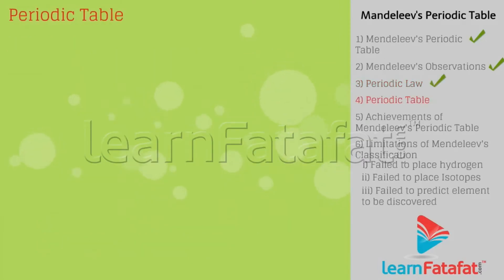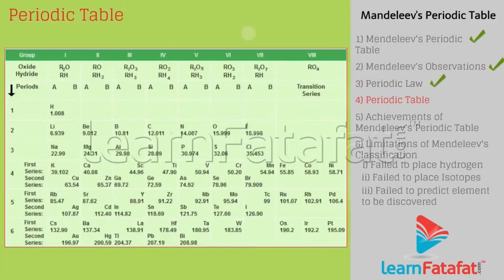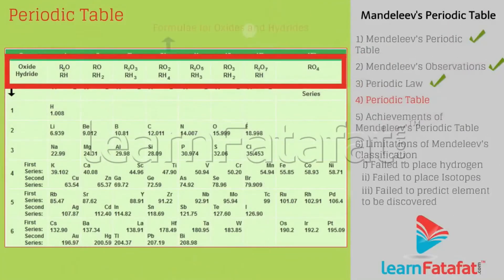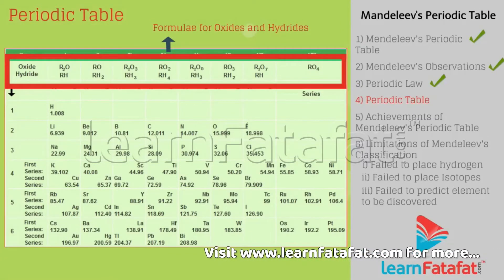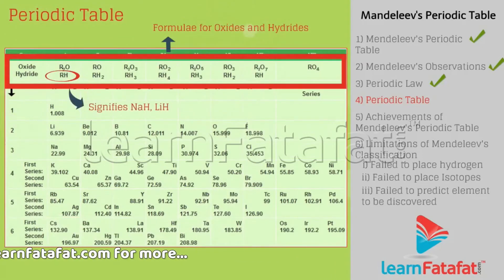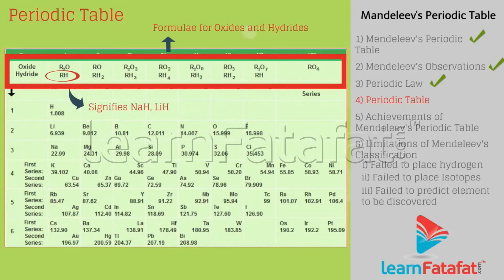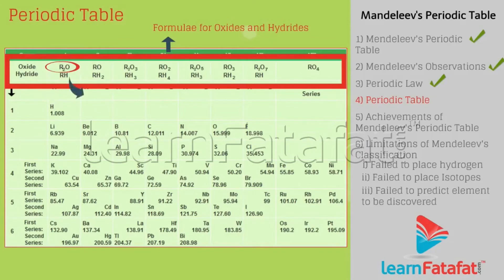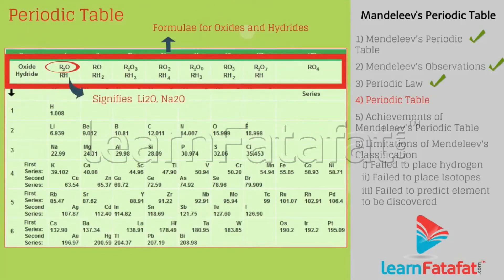Periodic table: formulas for oxides and hydrides are shown at the top of the periodic table, where 'R' signifies any element in that group. For example, RH signifies hydrides — NaH, KH, LiH. R2O signifies oxides — H2O, Li2O, Na2O.